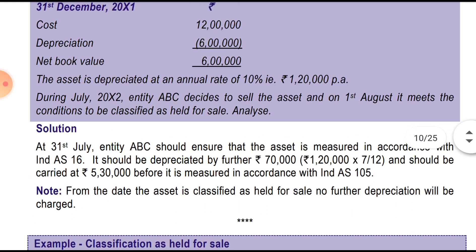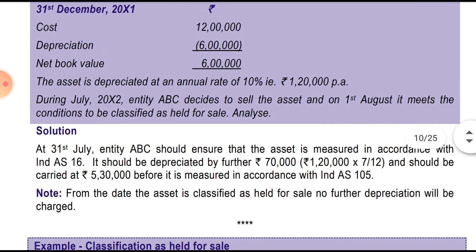The calculation is simple: 1 lakh 20,000 annual depreciation for 7 months gives 70,000. Deducting that from 6 lakh gives 5 lakh 30,000. On 31st July, entity ABC Limited should ensure the asset is measured in accordance with IND AS 16 — depreciation charged at 1 lakh 20 into 7/12, that is 70,000 — and carried at 5 lakh 30 before classification under IND AS 105. From the date the asset is classified as held for sale, no further depreciation will be charged.